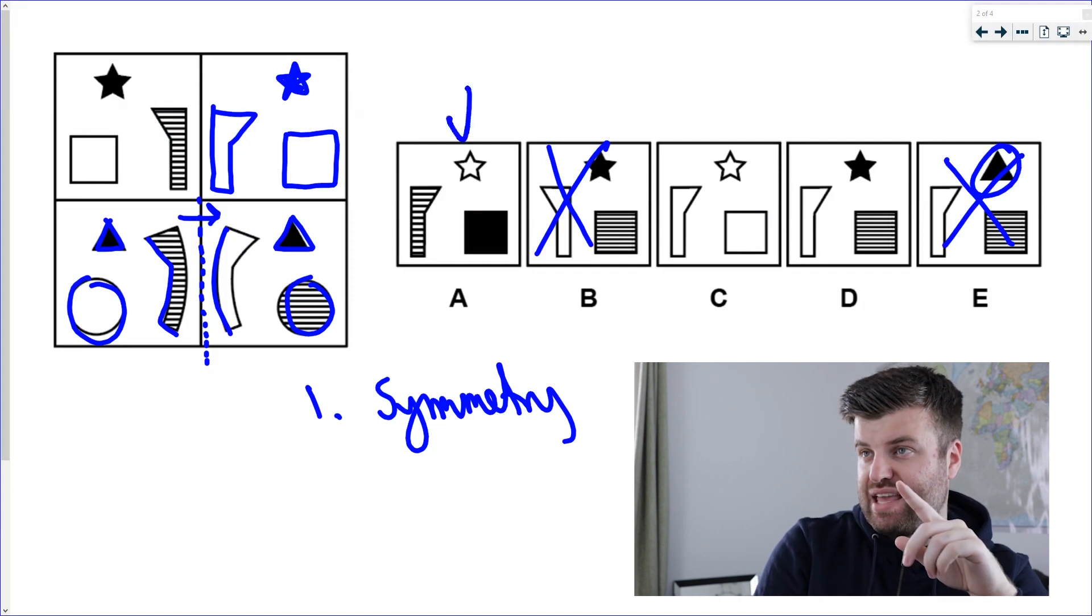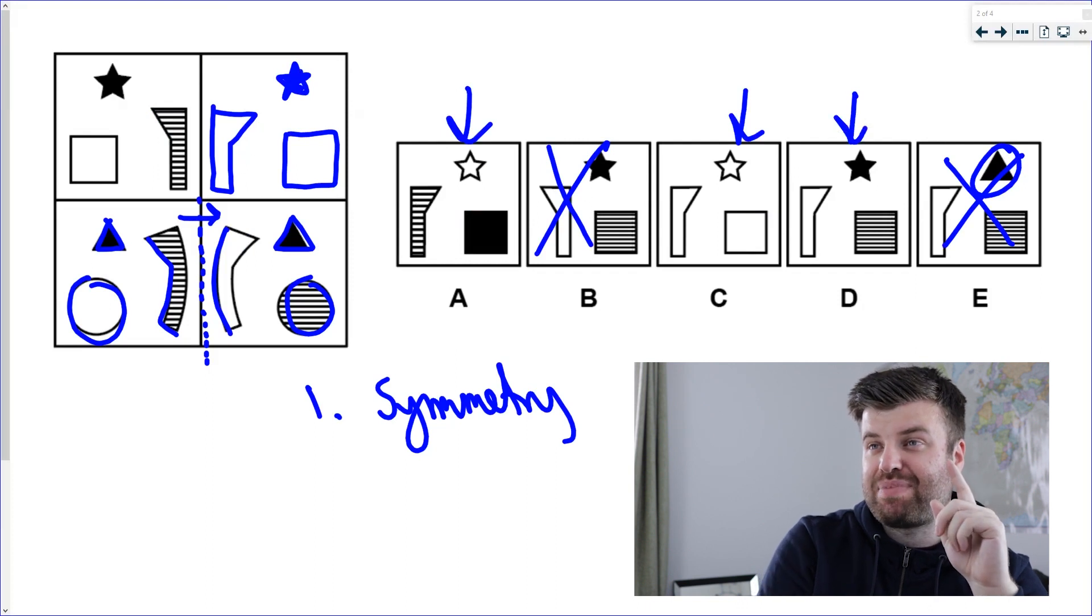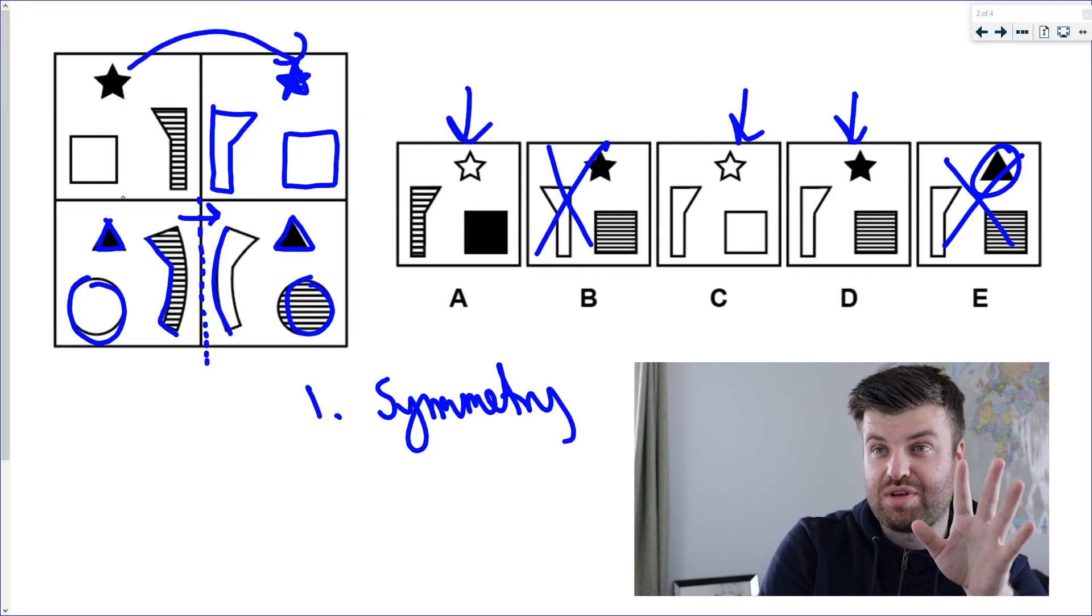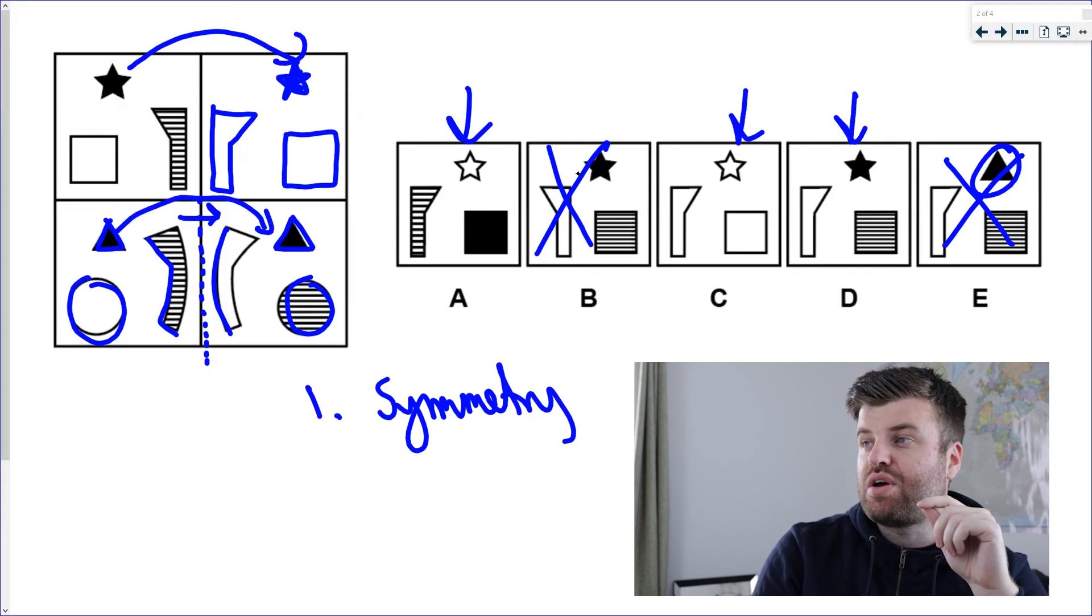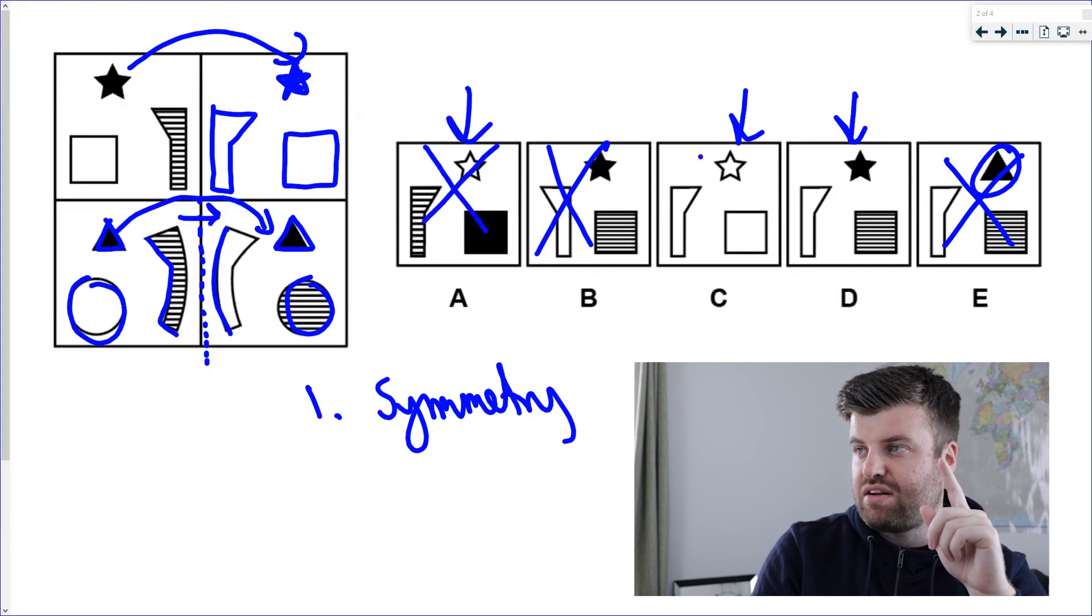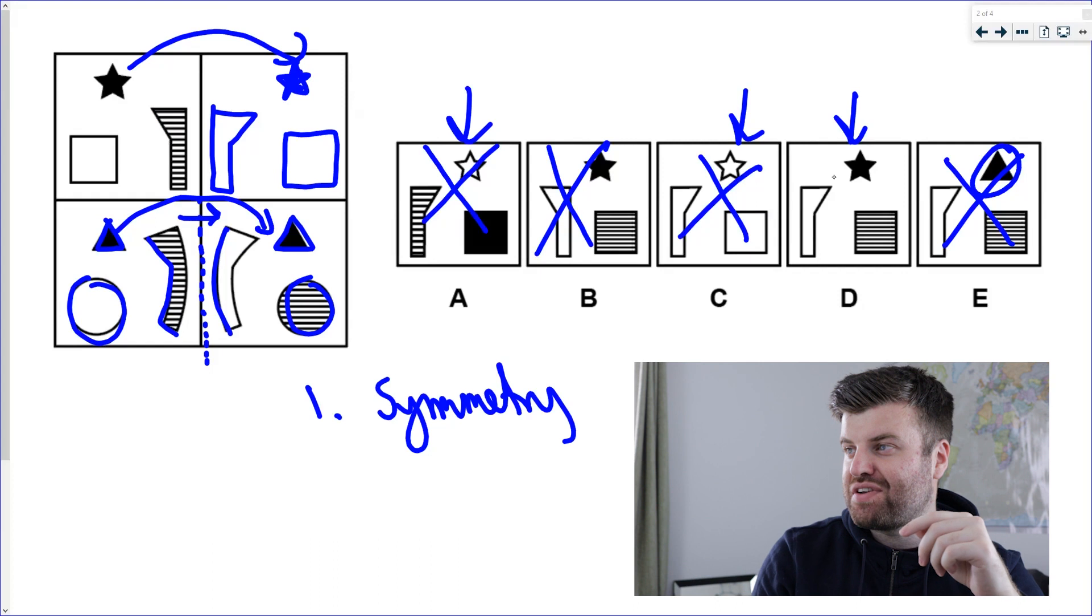So we've got three options: A, C, or D. Now hopefully you can tell that that black star needs to stay black, because we're going to match the bottom rule. The black triangle stays black, and so in fact here, I can get rid of A, I can get rid of C just from deduction and using the first two rules. The answer must be D. Move on.